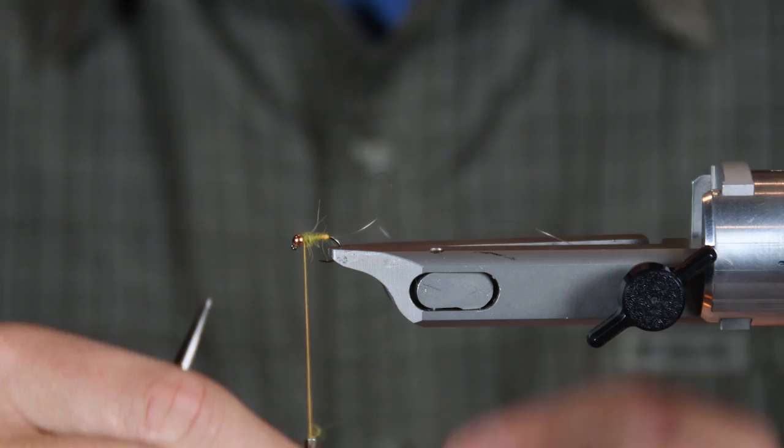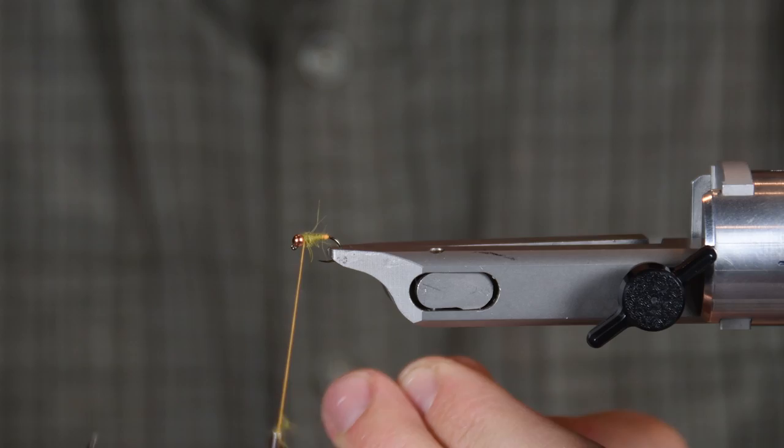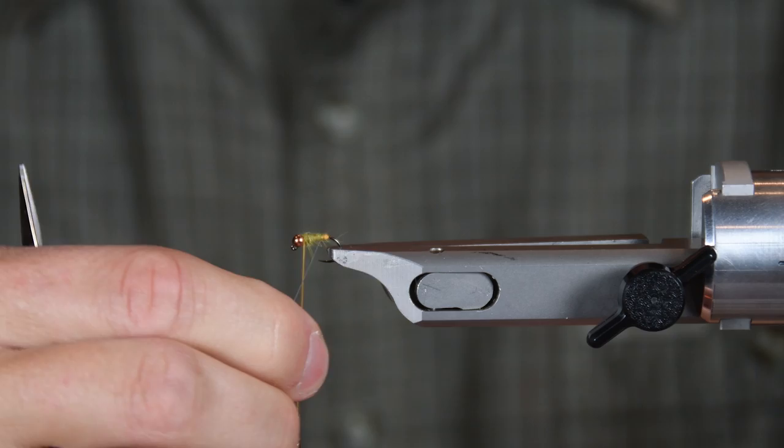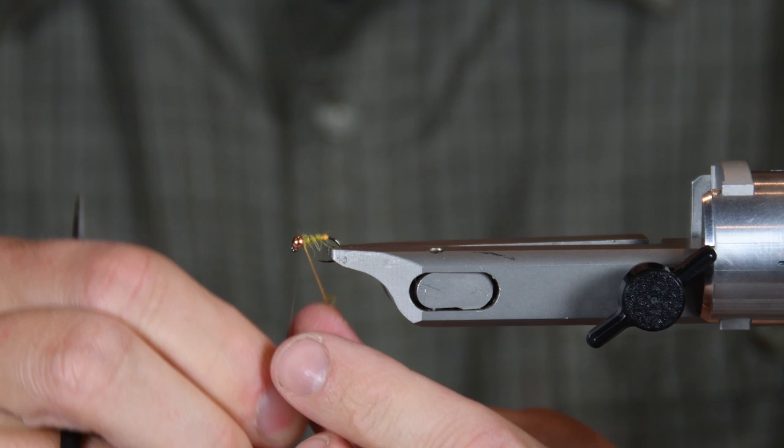Take my mono and I'm going to counter wrap. See, I'm going my thread this way, I'm going to go the opposite direction and get right in there behind the bead. Tie it off, get in front of it, get behind it.